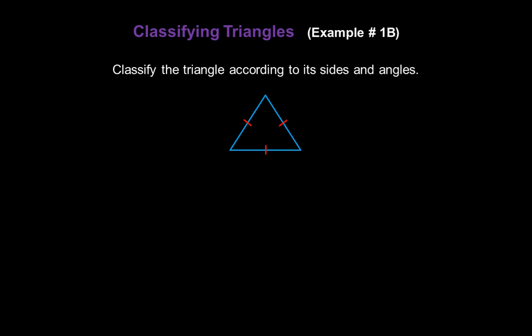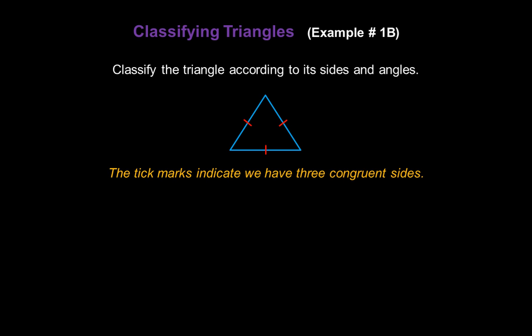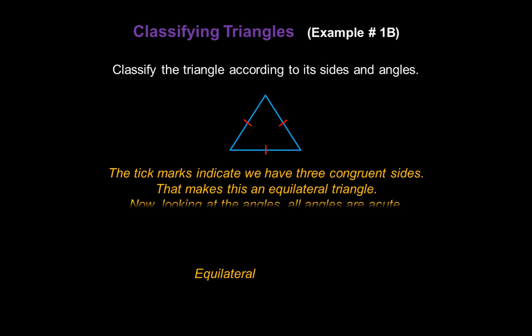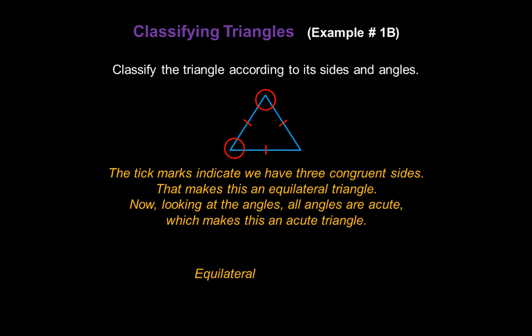Let's classify this triangle according to its sides and angles as well. This time we have tick marks indicating we have three congruent sides, which makes this an equilateral triangle. Looking at the angles, all of the angles appear to be acute, so that makes this also an acute triangle. So what we have is an equilateral acute triangle.